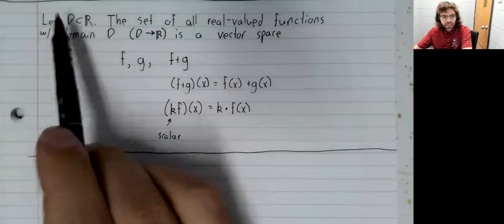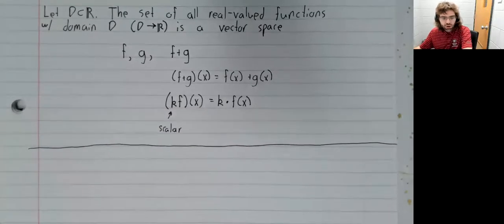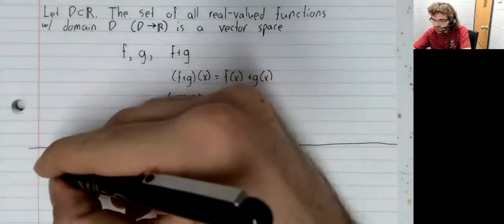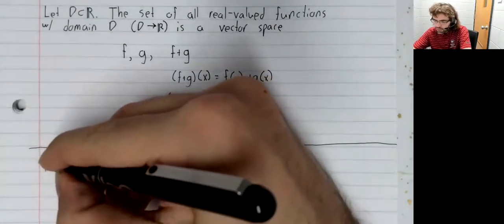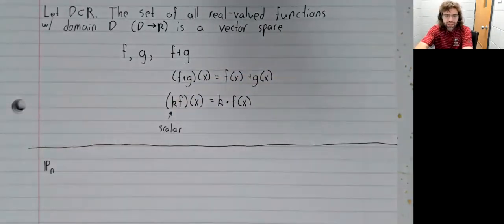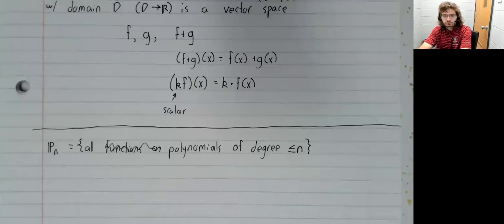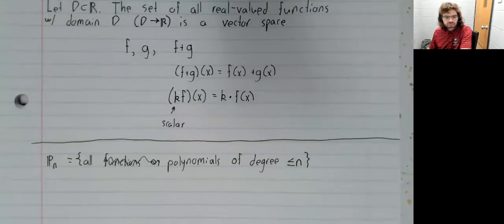Speaking of sets of functions, P_n, the set of all polynomials of degree less than or equal to n, is a vector space.